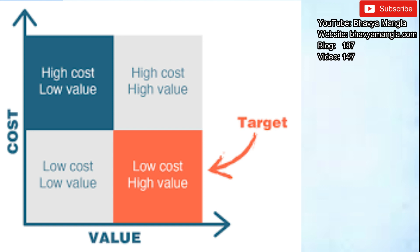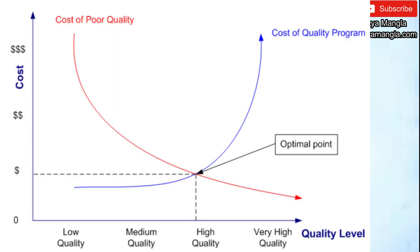Let's look at another graph — this one is between cost and quality level. At low quality, medium quality, and high quality, the cost is broadly acceptable. But as we go from high quality to very high quality, the cost increases two to three times. So we have to find the optimal point, which is the right trade-off for us, and if we do it that way we can ensure we are giving the right value.